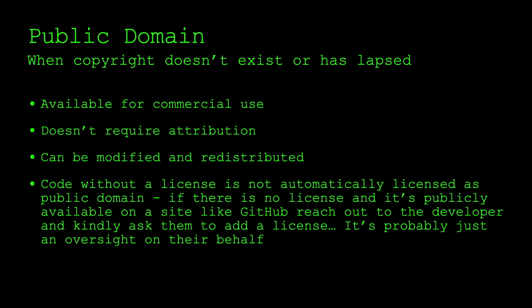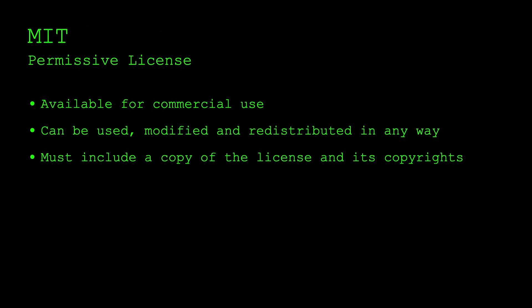It's probably just an oversight on their behalf — devs are not always strong on the business side, more into the coding side, though it's not true for everyone. One of the more common licenses is the MIT license. It's a reasonably permissive license and it's available for commercial use. The software can be used, modified, and redistributed in any way, but you must include a copy of the license and its copyrights.